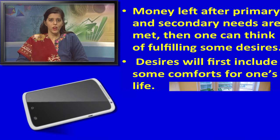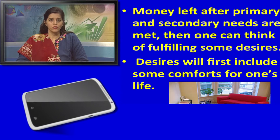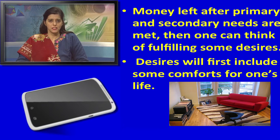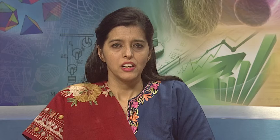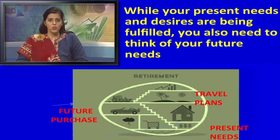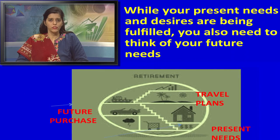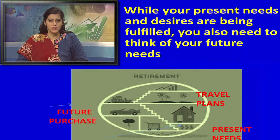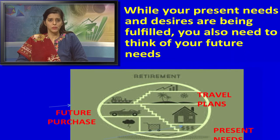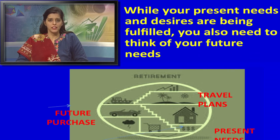Money left after primary and secondary needs are met can then be used to fulfill some desires. Desires will first include some comforts for one's life. While your present needs and desires are being fulfilled, you also need to think of your future needs — like future purchases, retirement plans, and your travel plans.